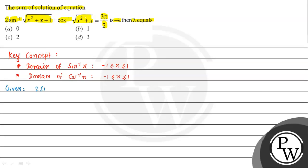The equation given is 2 sin⁻¹(√(x² + x + 1)) + cos⁻¹(√(x² + x)) = 3π/2. We can see that the domain of sin⁻¹ is minus 1 to 1. The term inside is √(x² + x + 1), and the term inside cos⁻¹ is √(x² + x). Both of these square root terms are always greater than or equal to 0.